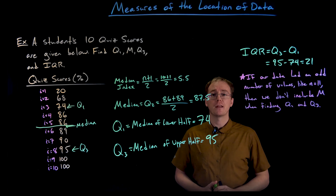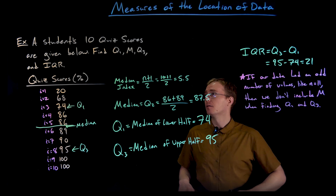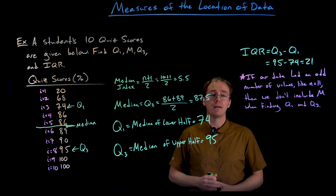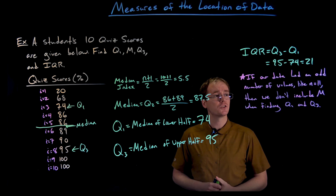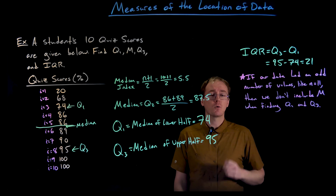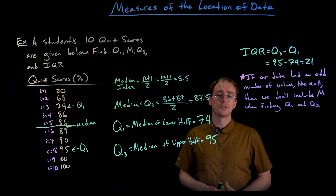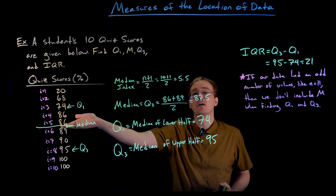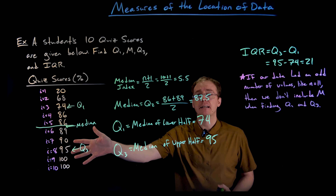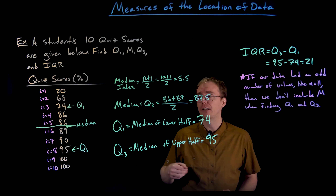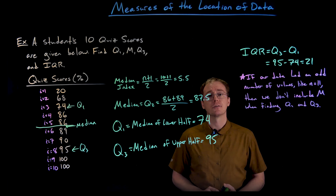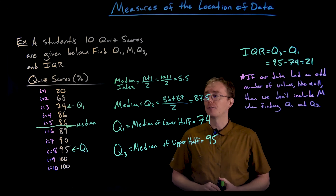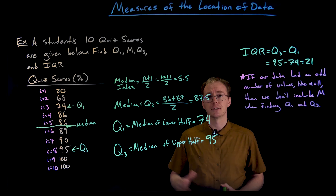One important note: if we had a data set with an odd number of values — say 11 instead of 10 quiz scores — we must not include the median value when finding Q1 and Q3. If we actually have a median value sitting in our data set, we don't consider it as part of the lower or upper half when finding those medians. Just remove that median if you have an odd number of data values, then go through the same process for Q1 and Q3.